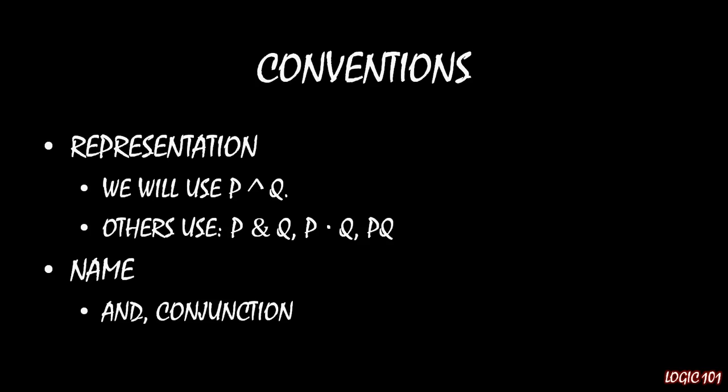Conventions: we represent AND in this course using the caret, which you might think of as an exponent sign — so P caret Q means P and Q. Others might use an ampersand: P ampersand Q. Some might use a dot in between the two sentences: P dot Q. Others might not use anything at all, just sticking the two letters together — PQ. We will be using the caret. Name-wise, I'll stick with AND whenever I speak of it. So P AND Q is how I'll say it — but it's the same thing as a conjunction. AND and conjunction mean the same thing; I'll be using both words.